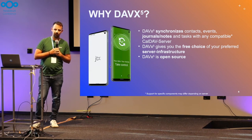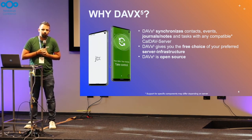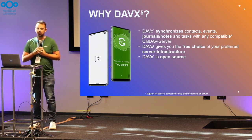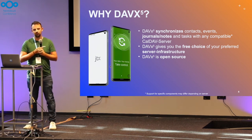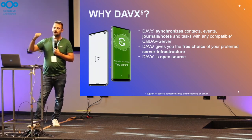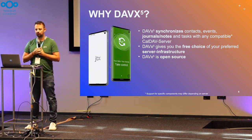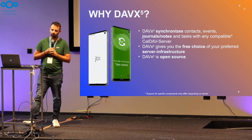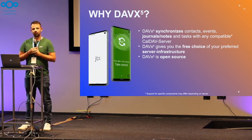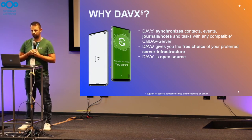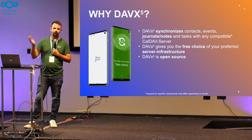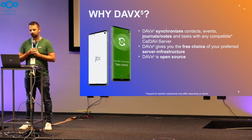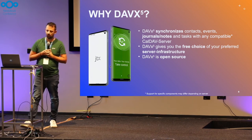We already heard before about DAVX5. Now, JTExport can work as a standalone app — you can export entries in ICS format. But you'll also want to synchronize your entries over the internet. That's why DAVX5 is the logical next step, to also enable synchronization of vJournals. A lot of CalDAV servers, including Nextcloud, already support this component. So it was a logical step to enable this in DAVX5 as well. DAVX5 gives you free choice of your server infrastructure. JTExport is currently the only app that supports the vJournal standard on Android.